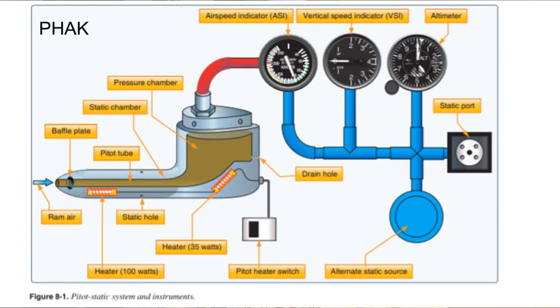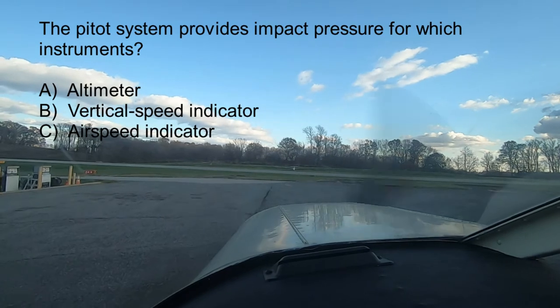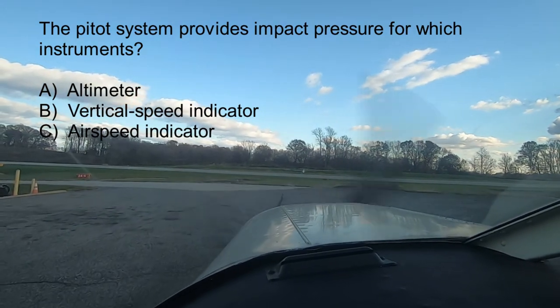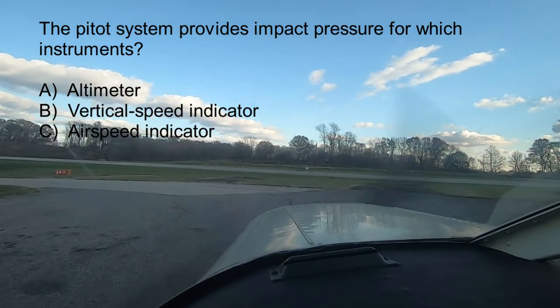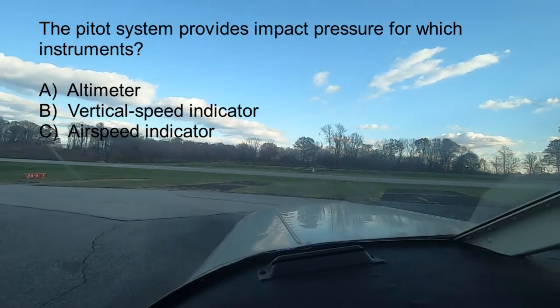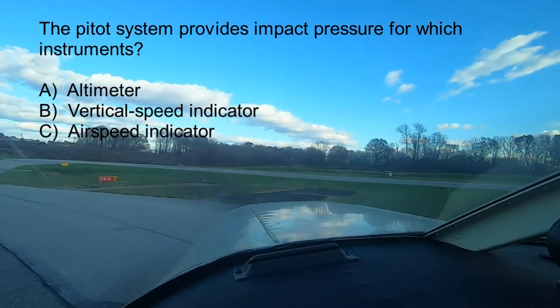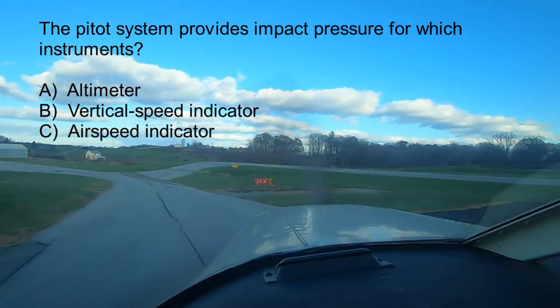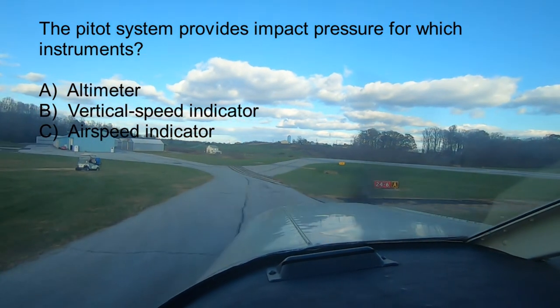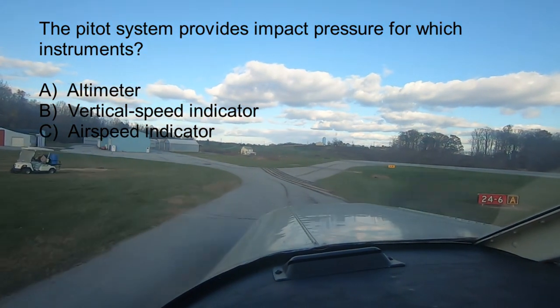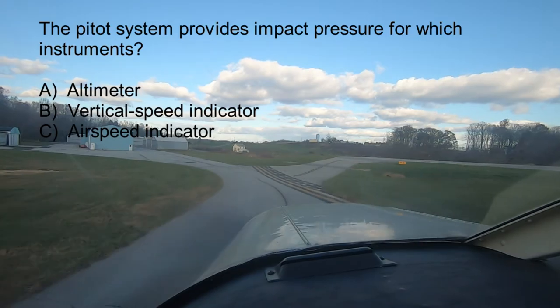With that introduction in mind, let's look at some potential private pilot questions. Question number one: the pitot system provides impact pressure for which instrument — altimeter, vertical speed indicator, or airspeed indicator? The answer is C, airspeed indicator. The pitot system provides ram air pressure for the airspeed indicator alone. Both the altimeter and the VSI operate off of the static system.